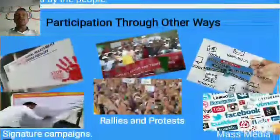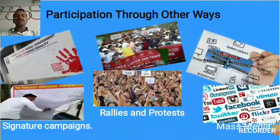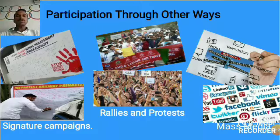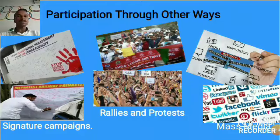The next way of participation involves signature campaigns. As you can see in the image above, 'Stop Violence Against Women' — people came together and gave their signatures. You do similar things in class sometimes: if you don't like some decisions, all the students come together, make a signed petition, and give it to the principal. In this way, we can call it a signature campaign.